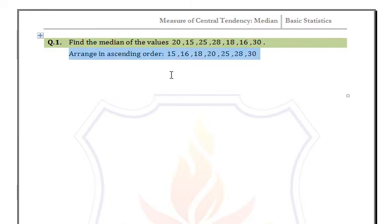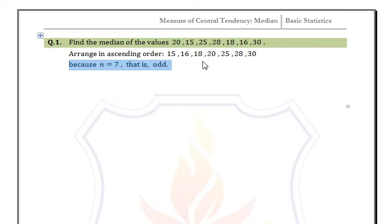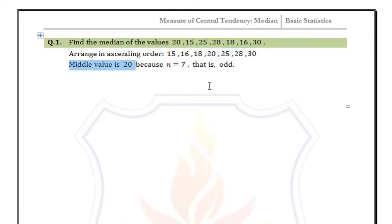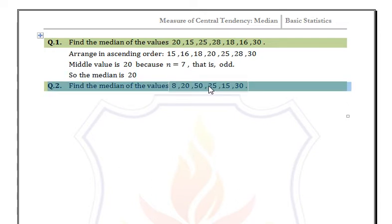The total number of observations is 7, which is an odd number. So we have one middle value, and the middle value is 20. Therefore, the median is equal to 20.